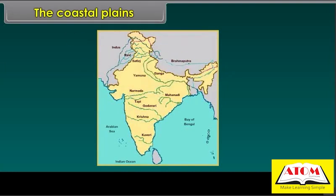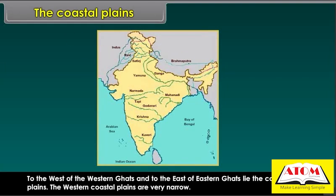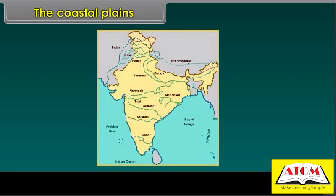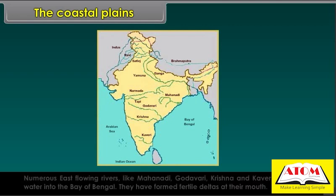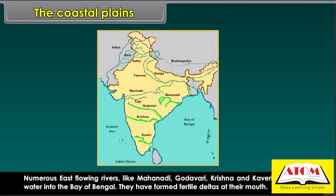To the west of the Western Ghats and to the east of the Eastern Ghats lie the Coastal Plains. The Western Coastal Plains are very narrow, drained by the west-flowing rivers Narmada and Tapi. The Eastern Coastal Plains are broad. Numerous east-flowing rivers like Mahanadi, Godavari, Krishna and Kaveri drain water into the Bay of Bengal and have formed fertile deltas at their mouths.